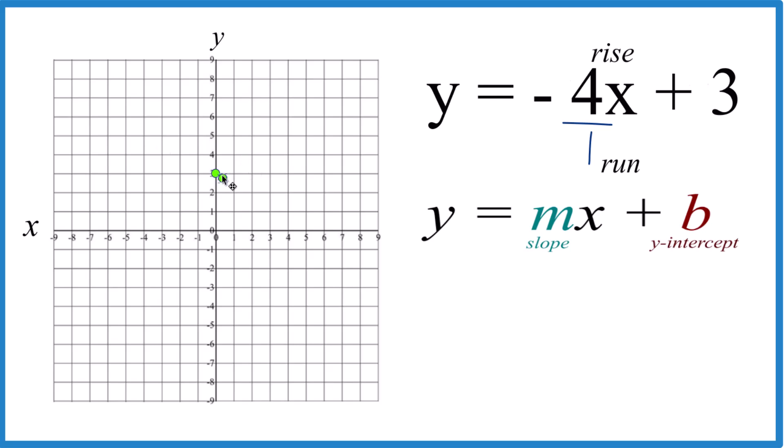We go back to the y-intercept. We're going to go negative 4. We rise negative 4, but it's negative, so let's go down. 1, 2, 3, 4, and then run 1.